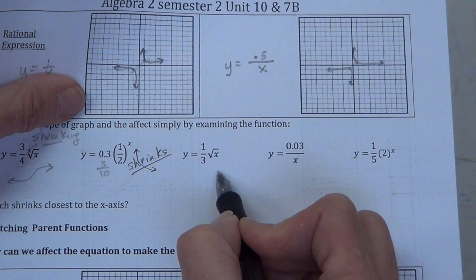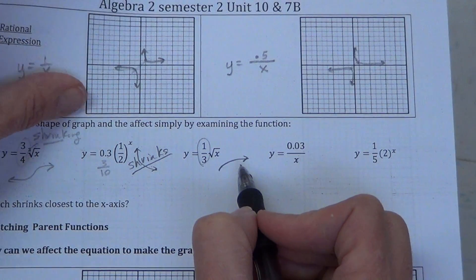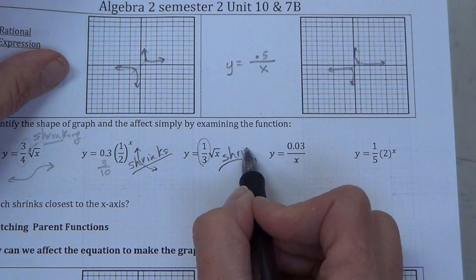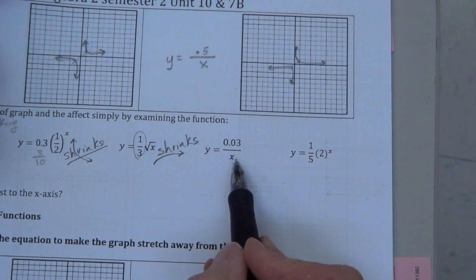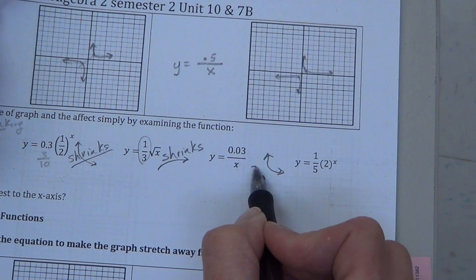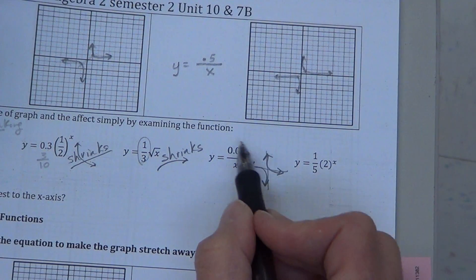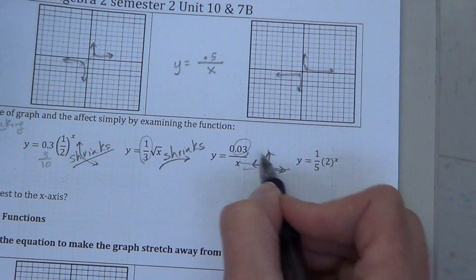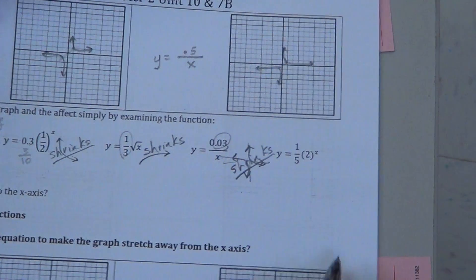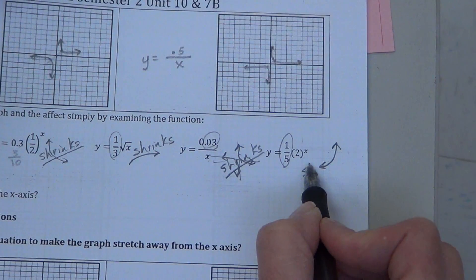This one, square root, that's that hook shape. It's got 1 third in front. 1 third has an absolute value less than 1. So we say it shrinks. x is on the bottom. I hope you recognize that as your rational expression graph like this. And it shrinks, because it's 0.03. So it's three hundredths. It's really shrinking down. This is an exponential growth going this way. 1 fifth, so it shrinks as well.